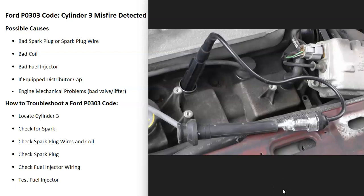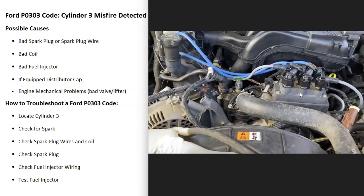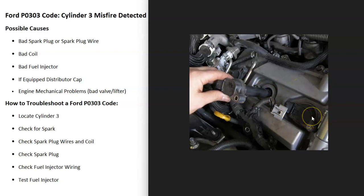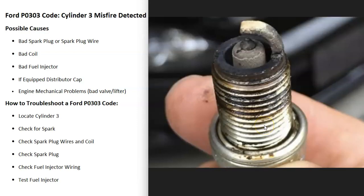If you're not getting spark, check the coil pack. If you have coil-on-plug coils, you can swap it with the one next to it and see if the problem follows. For example, if you pull it out and swap it with cylinder number two, then clear the codes and get a P0302 code, you know that coil is bad and needs to be replaced. You can also remove the spark plug on cylinder number three and inspect it, especially if the engine has a lot of miles and the plugs have never been changed.